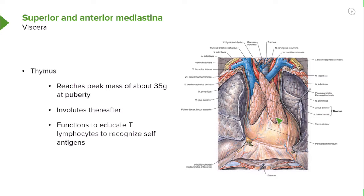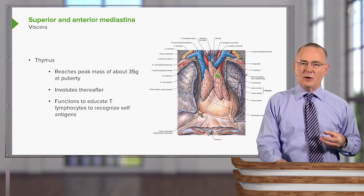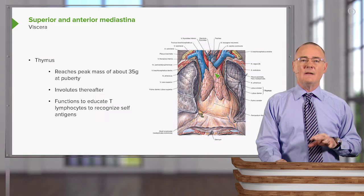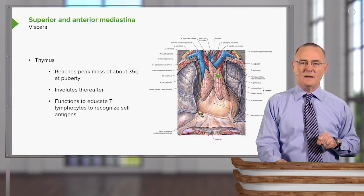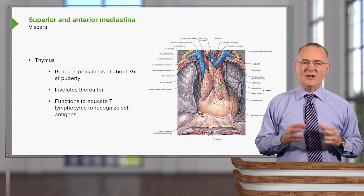The thymus gland reaches its maximum mass at around puberty, approximately 35 grams. Thereafter, it involutes and we have a degeneration of the thymic tissue. Very little remains in an elderly person, and what does remain is scattered within adipose tissue located within these mediastinal compartments.